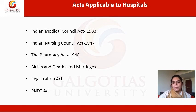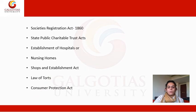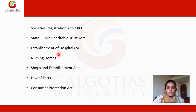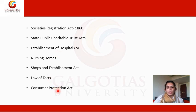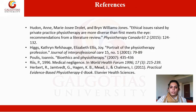What are the acts applicable to hospitals? A few examples: Indian Medical Council Act 1933, Indian Nursing Council Act 1947, the Pharmacy Act 1948, then Birth and Deaths and Marriages Registration Act, and PNDT Acts. Other examples include the Societies Registration Act 1860, state public charitable trust acts, establishment of hospitals or nursing homes, shops and establishment act, law of torts, and the Consumer Protection Act. Amongst all these acts, the Consumer Protection Act is in our syllabus and will be discussed in the next lecture. These are certain practice questions, and here are your references. Thank you.